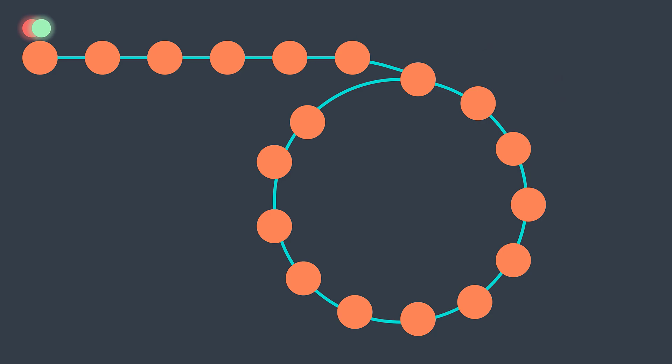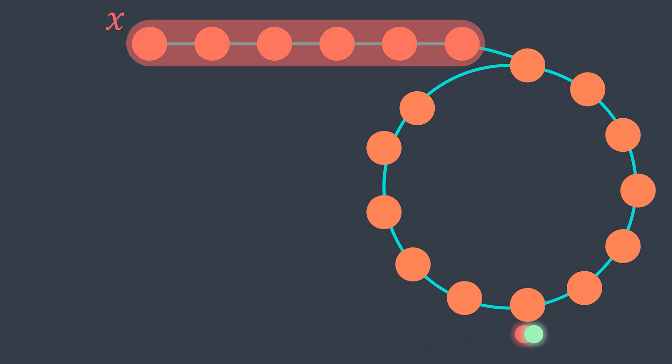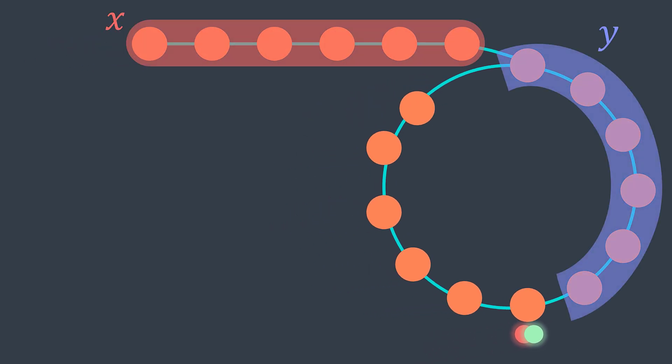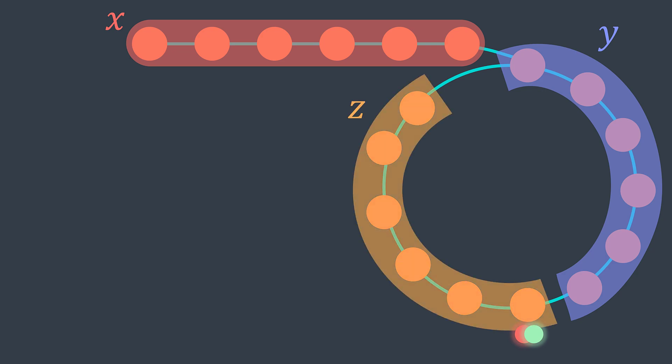Here is a linked list that contains a cycle. We put our slow and fast pointers and they keep walking until they meet. We can divide the linked list into different parts: the part before the cycle, named x; the part before the meeting point, named y; and the part starting from the meeting point, named z. The distance before the meeting point plus the distance after equals the length of the cycle: l = y + z. We will need this information later.